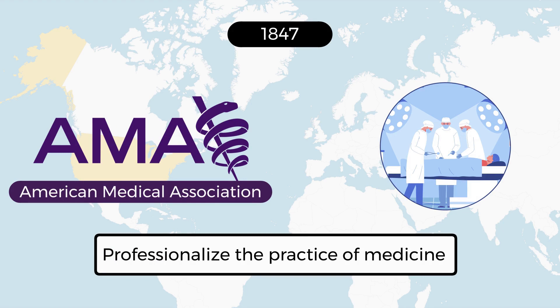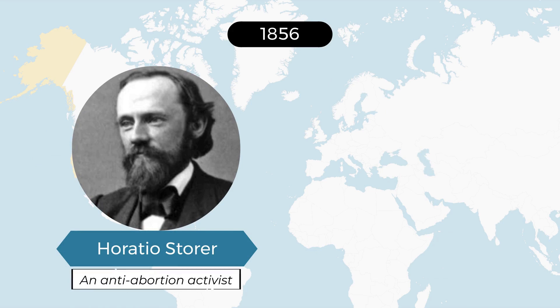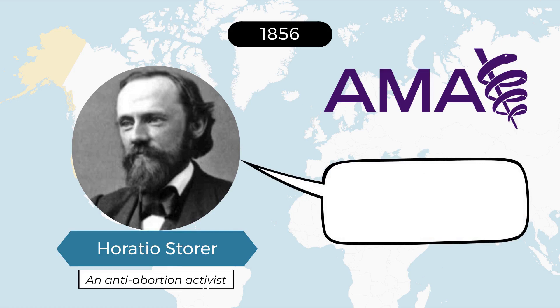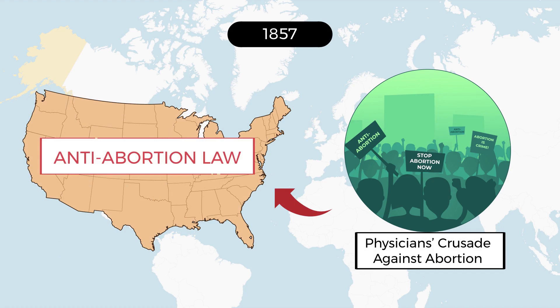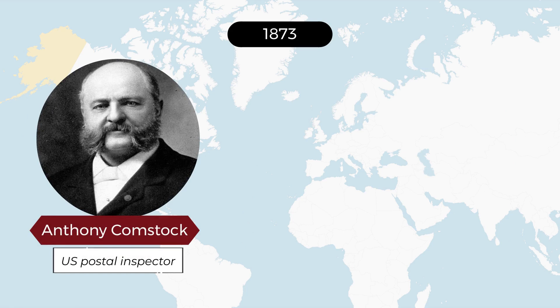In 1856, gynecologist Horatio Storer, also an anti-abortion activist, joined the AMA and started to push the association to explore what he called criminal abortion. In 1857, he led the physician's crusade against abortion in the U.S., contributing to the creation of anti-abortion statutes nationwide. In 1873, with the help of Anthony Comstock, a U.S. postal inspector, the Comstock Law was passed, prohibiting the delivery of obscene materials, including information about abortion or contraception.